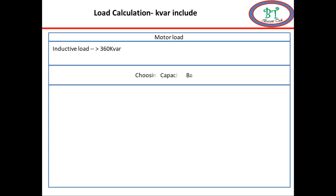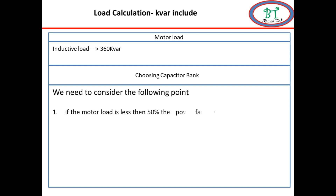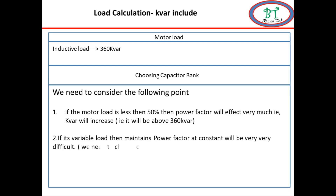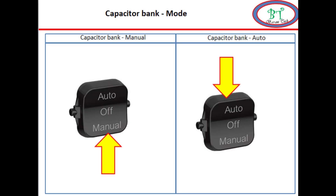We need to consider the following points when selecting the capacitor bank. If the motor load is less than 50%, the power factor will be affected very much — that is, the kVAR increases. Second, if it is a variable load, maintaining power factor at constant is very difficult. If the motor load is varying from 30% to 60% load, we cannot keep the capacitor bank in manual mode; we have to choose the capacitor in auto mode to select the capacitance value automatically.